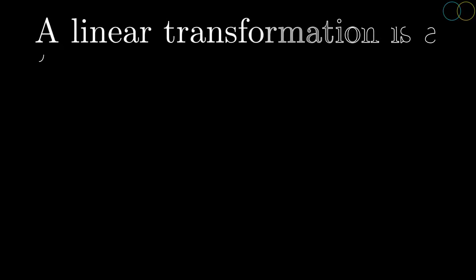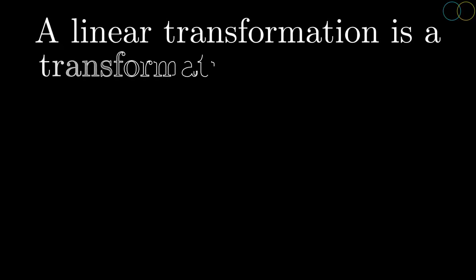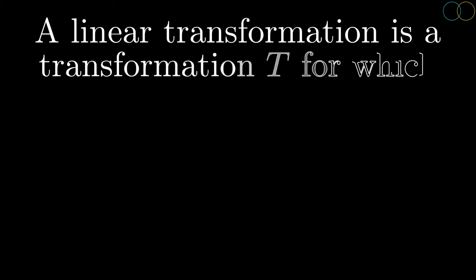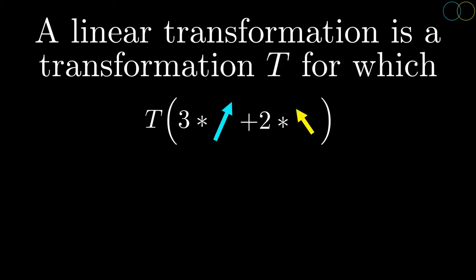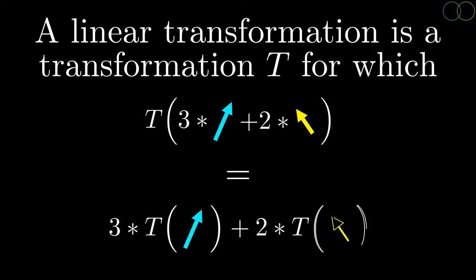A transformation that has that property is called a linear transformation. That is to say, a linear transformation is a transformation where the transformation of a linear combination of vectors gives the same result as the linear combination of the transformation of each vector.